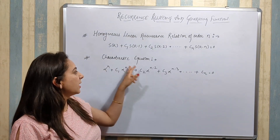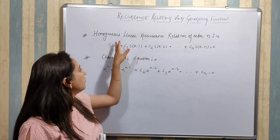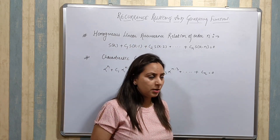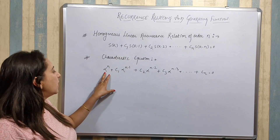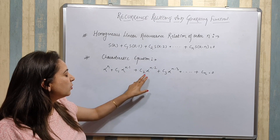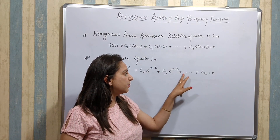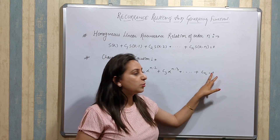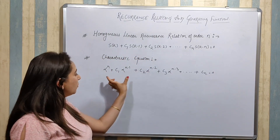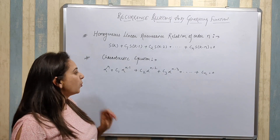The next concept is the characteristic equation, which is a very important concept for recurrence relations, whether homogeneous or non-homogeneous. The characteristic equation is: α^N + C1·α^(N-1) + C2·α^(N-2) + C3·α^(N-3) + ... + Cn = 0. The left-hand side of this equation is known as the characteristic polynomial.